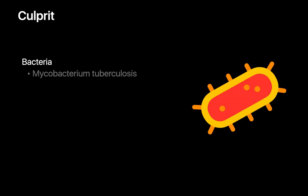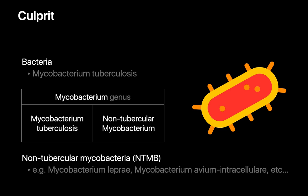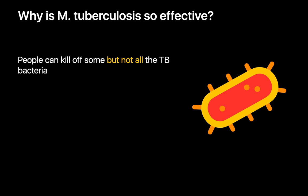TB is caused by Mycobacterium tuberculosis. Other species within TB's genus are also common infections that we refer to as non-tubercular mycobacteria. MAI is probably one of the best known non-tubercular mycobacterial infections, though there are many others. TB is an incredibly effective pathogen — not only does its complex cell wall and membrane offer a great defense against our immune system, it's great at circumventing the machinery our white blood cells use to kill bacteria too.